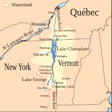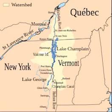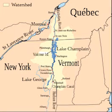In New York, it is fed by the Ossible, Bocquet, Great Shazey, Le Chute, Little Ossible, Little Shazey, Salmon and Saranac Rivers, along with Putnam Creek. In Quebec, it is fed by the Pike River.